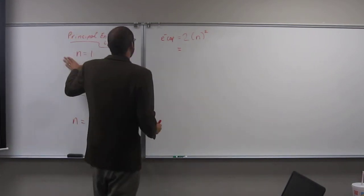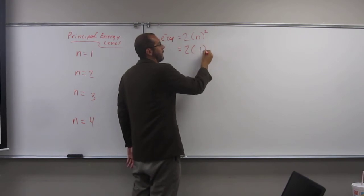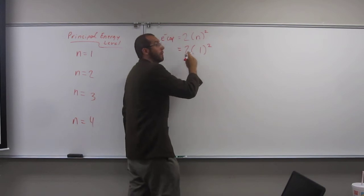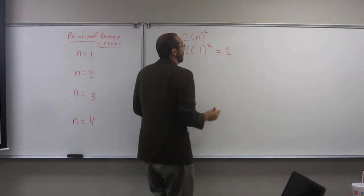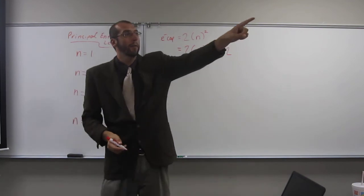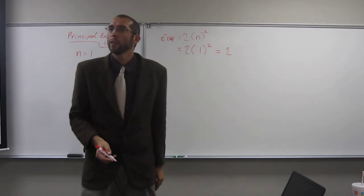So, this n equals 1 would be 2, and we'll just plug and chug. 1 squared is what, 1, right? Times 2. So, the first energy level can hold 2 electrons. If we look at the periodic table, isn't that the case? Right? The first energy level can only hold 2 electrons.